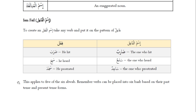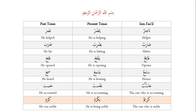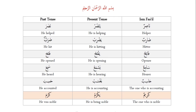This applies to five of the six abwab. Remember, verbs can be placed into six bab based on their past tense and present tense forms. All of them follow the pattern of fa'il: we have nasir — a helper, darib — hitter, fatih — opener, sami' — hearer, hasib — the one who is accounting. The only exception is karuma yakrumu, which follows the pattern of fa'ilun, giving us kareemun. So for ismul fa'il, all six abwab follow the pattern of fa'il except karuma yakrumu, which follows fa'ilun.